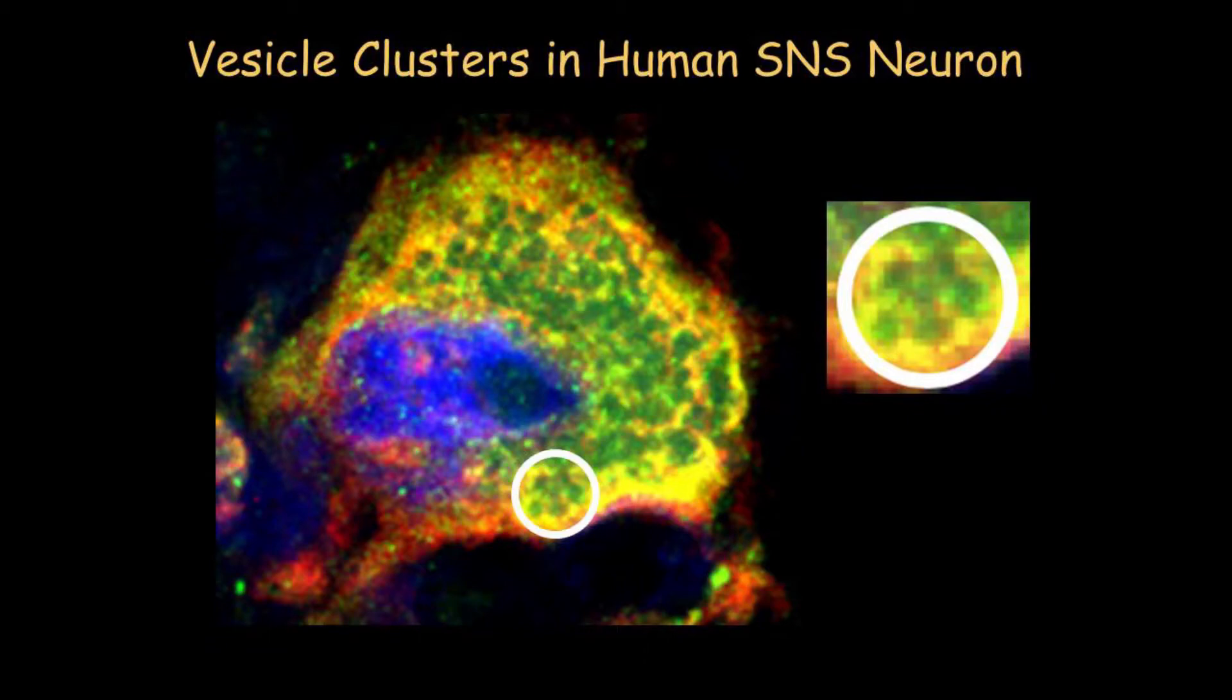Here's a beautiful image provided by Risa Isonaka, showing either vesicles or clusters of vesicles. We haven't figured that out. In a human sympathetic neuron, this is inside the ganglion.